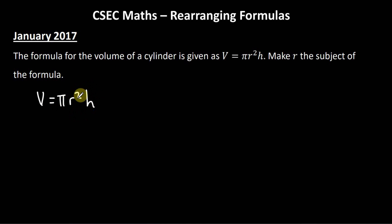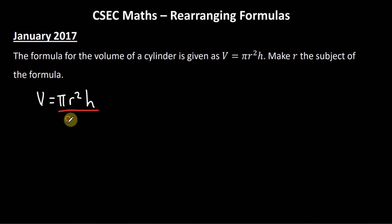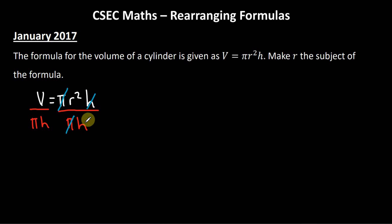So the formula is V = πr²h, and we need to get r on one side by itself. Now πr²h is the same thing as π × r² × h. We're multiplying by π and h, so to get rid of them we must do the opposite, which is to divide by πh. If we divide by πh on one side we must do the same on the other side to keep both sides balanced. π will cancel π and h will cancel h.